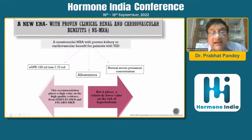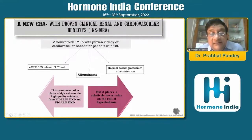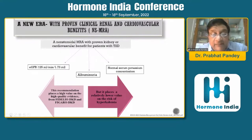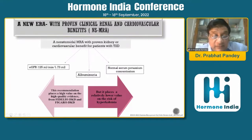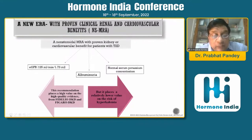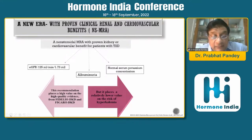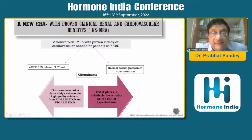Clinical renal and cardiovascular benefits have been shown with the non-steroidal mineralocorticoid receptor antagonist (MRA). It should be added if GFR is more than 25 ml per minute, there is albuminuria, and serum potassium is normal. There are two landmark trials in favor of non-steroidal MRA: the FIDELIO-DKD trial and the FIGARO-DKD trial. The recommendation places high value on quality evidence but acknowledges a relative lower value due to the risk of hyperkalemia.